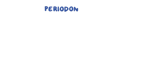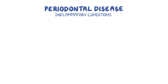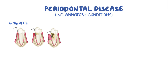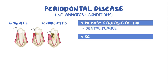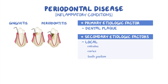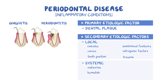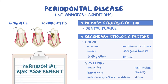As a quick recap: periodontal disease refers to a group of inflammatory conditions that affect the supporting tissues around the teeth. The mildest form is gingivitis, which if left untreated can progress to periodontitis. The primary etiologic factor is dental plaque, while secondary etiologic factors include local factors such as calculus, caries, tooth position, anatomical features, iatrogenic factors, and trauma, as well as systemic factors including endocrine, hematologic, and immunocompromised conditions, medications, smoking, and stress. Periodontal risk assessment is used to identify individuals more likely to develop periodontal disease.